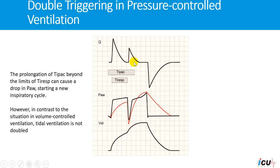I hope this makes it clear in your mind what we mean by double triggering and how we identify it in both pressure versus volume-control modes of ventilation. If you have any questions or comments, please add them to the comment section of this video.